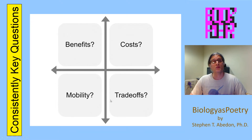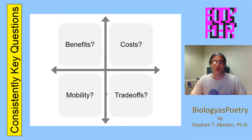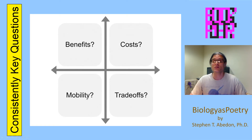You can also think in terms of trade-offs — in what way are the benefits of the process resulting in costs in other aspects of the organism? You can also ask the question of mobility: what is the potential for the process to move, particularly from one organism to another organism by horizontal gene transfer?